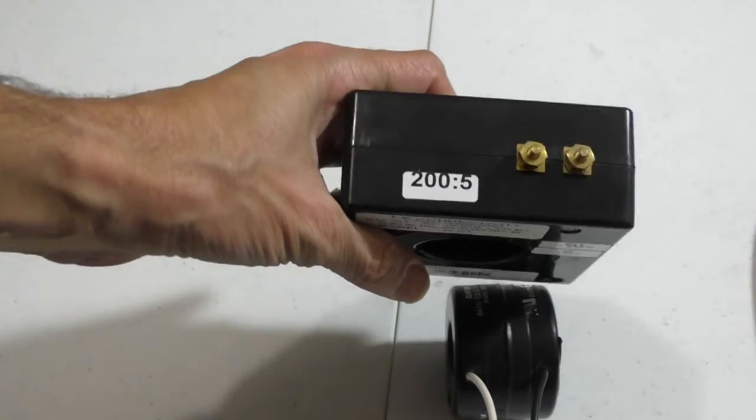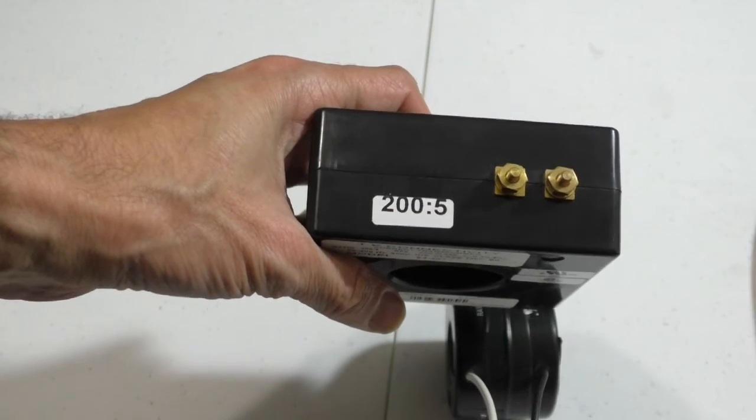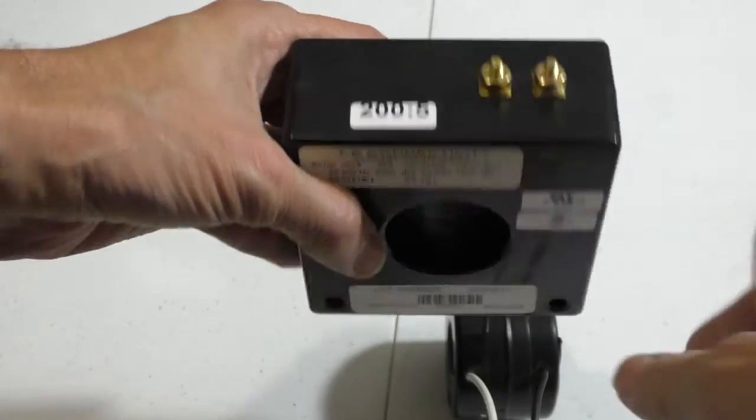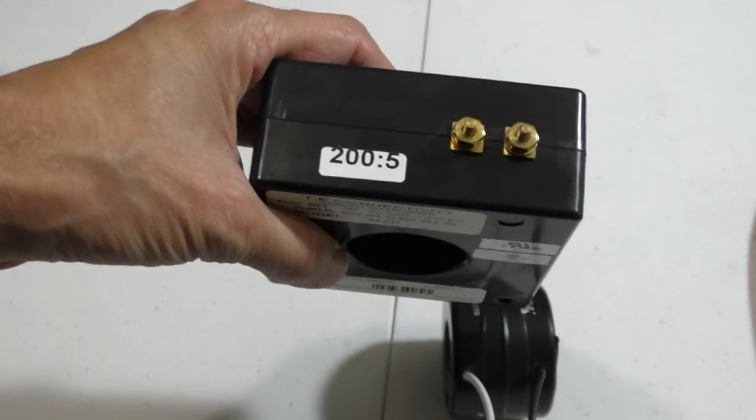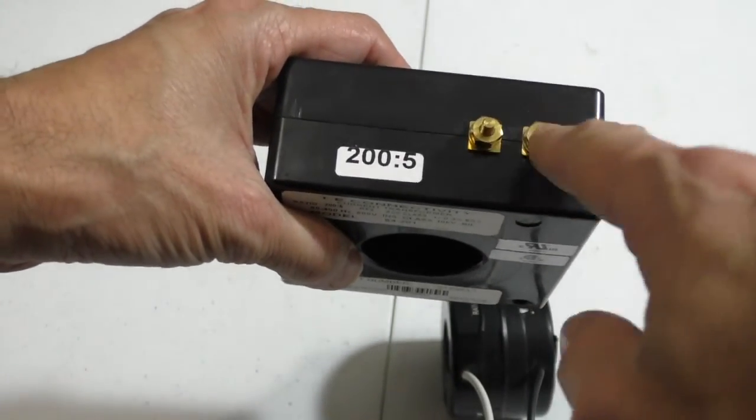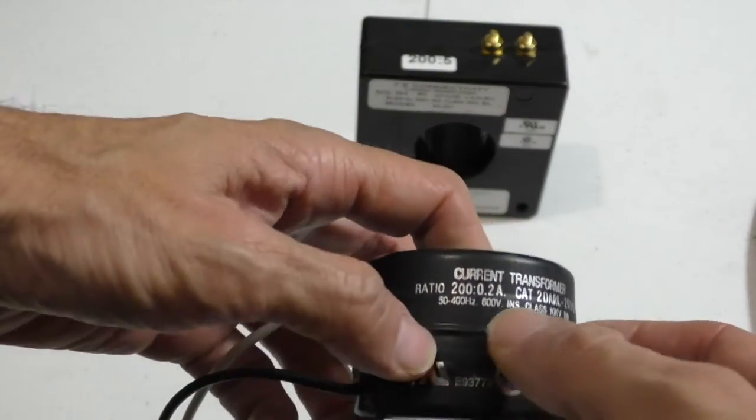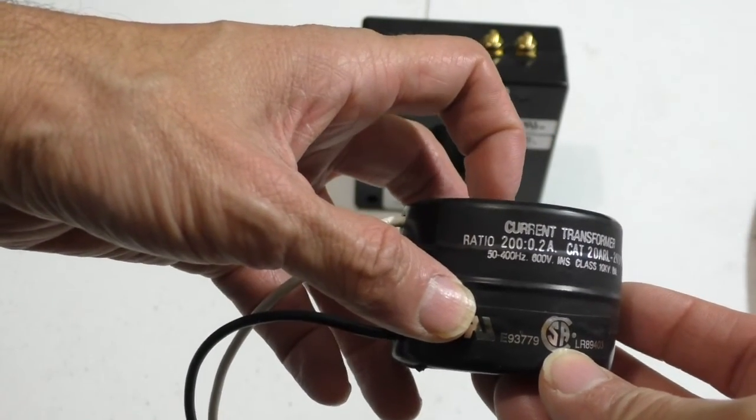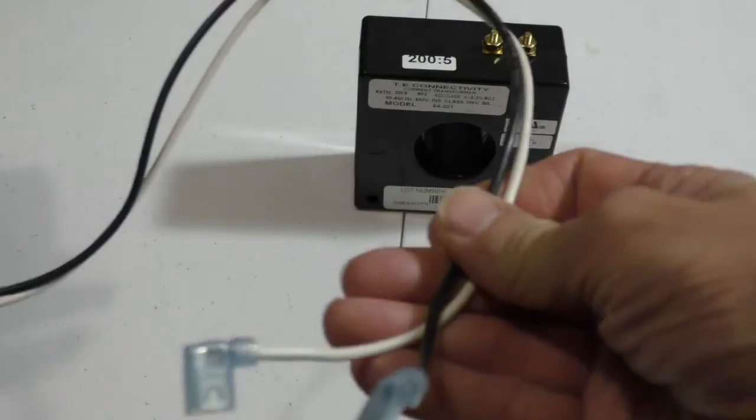However, before I do that, I'll show you what these numbers all mean on here and talk a little bit about safely handling these. And you'll notice there are these markings here: this is 200 to 5. What that means is if you have 200 amps flowing through your wire, you'll have 5 amps coming out of the secondary of the transformer or the CT. For this one here, this is 200 to 0.2. So if you have 200 amps going through this transformer, you'll have 200 milliamps coming out of the secondary or these wires here.